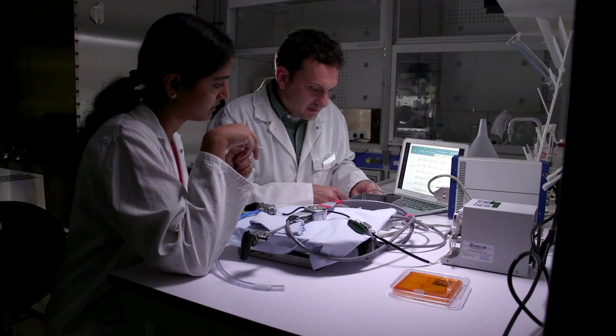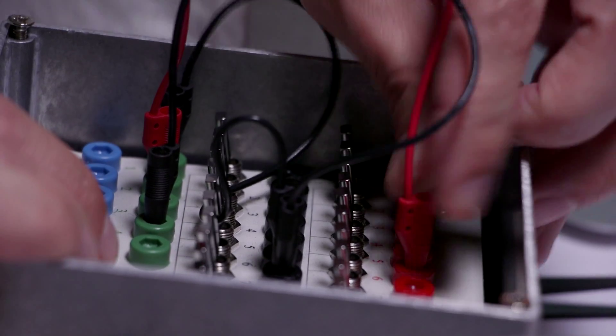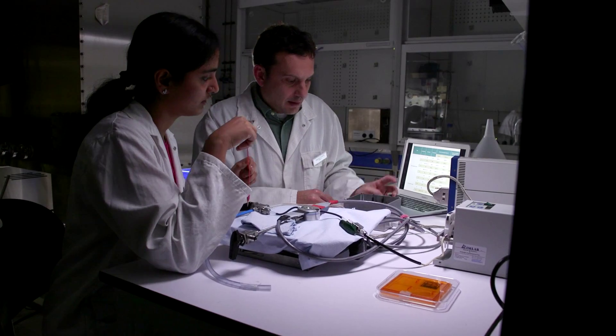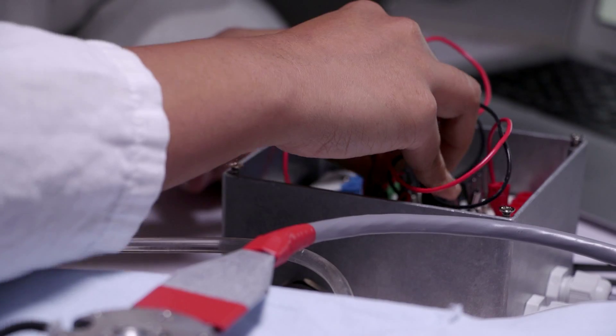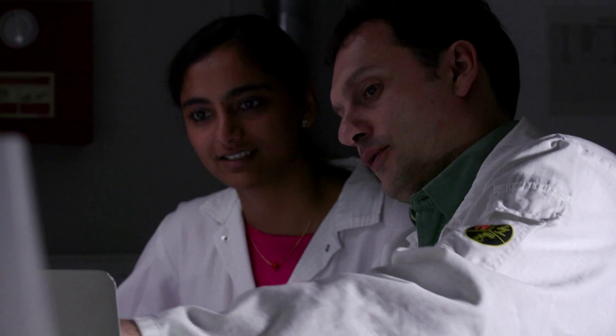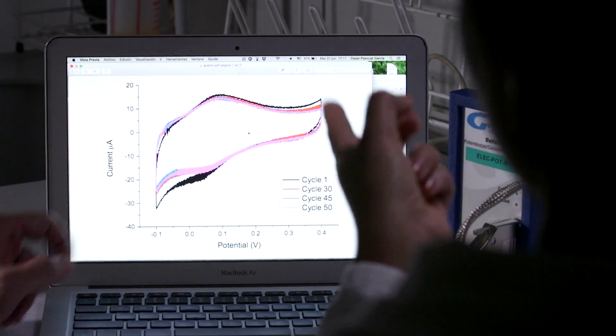Electrochemical sensors allow you the same control that you would have with a computer. So the same that a computer can control millions of transistors, electrochemical sensors can be parallelized in a way that you can sense at the same time millions of molecules.